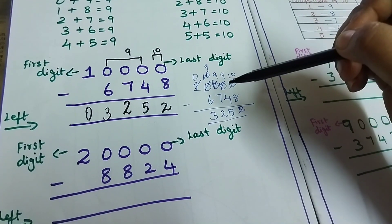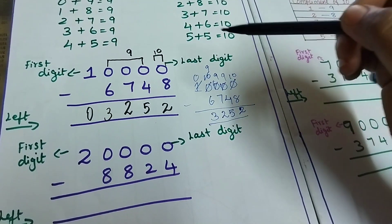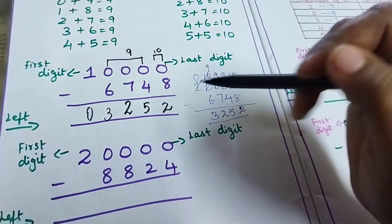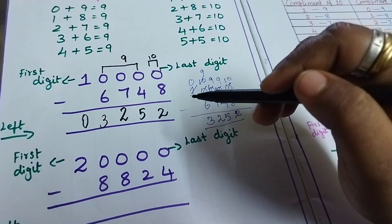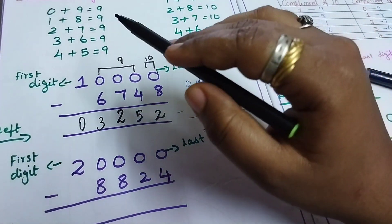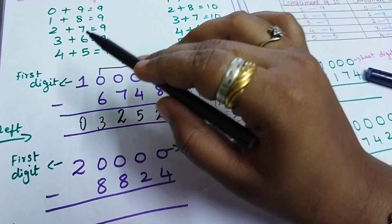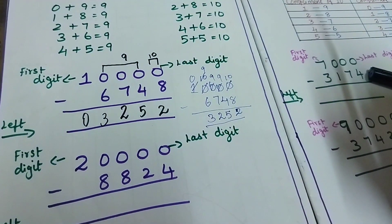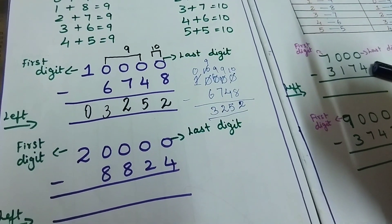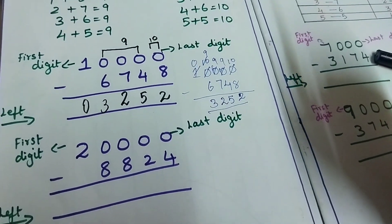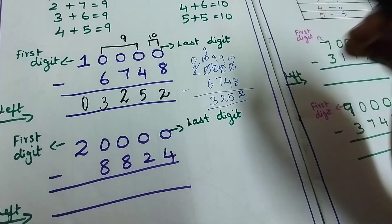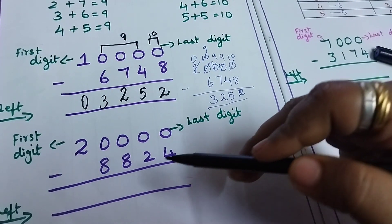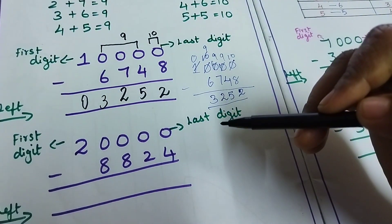Instead of borrowing and regrouping like this, you can do this in a mental calculation. If you know the combinations of these numbers, you can do it very easily. Now for example, if you take 20,000 minus 8,824.